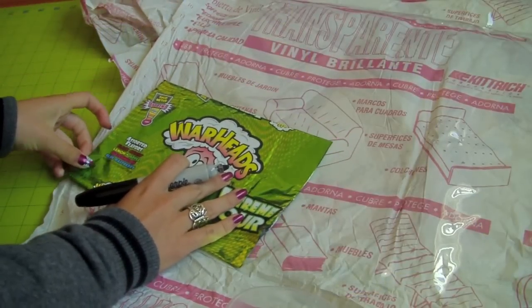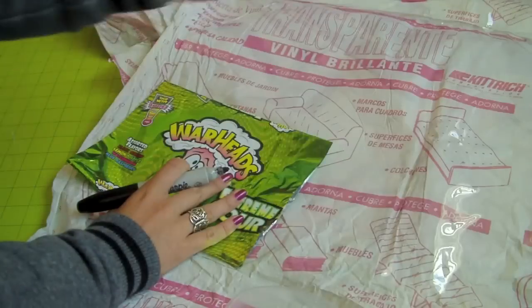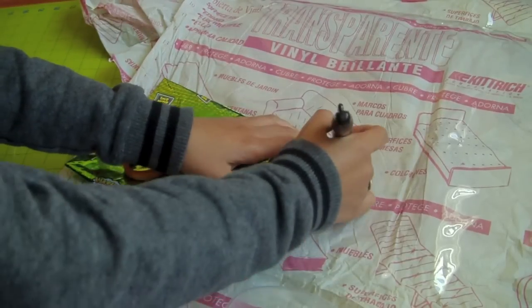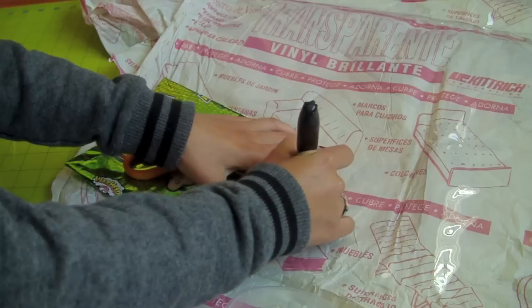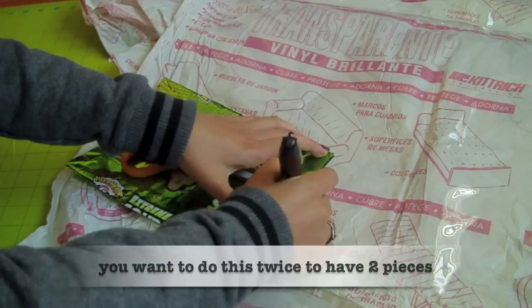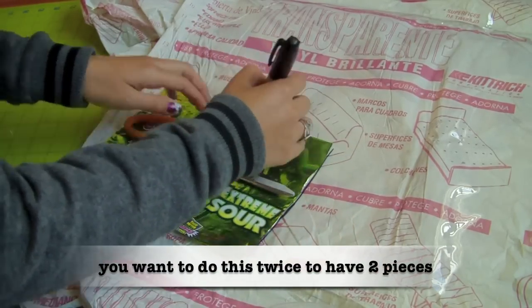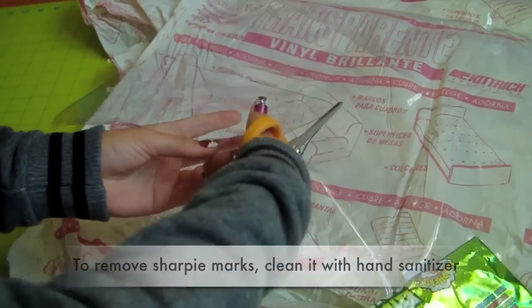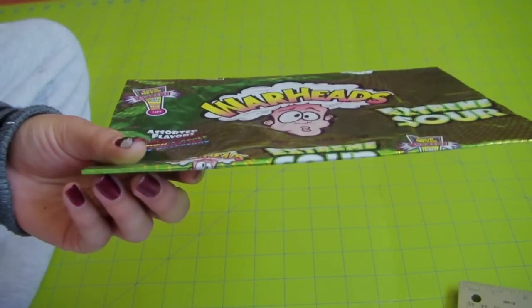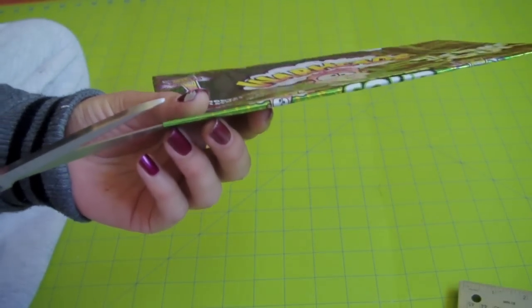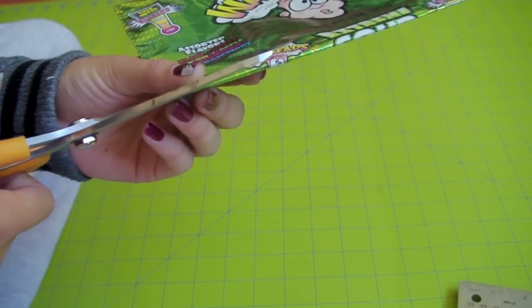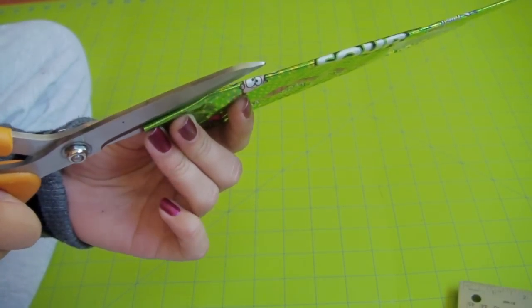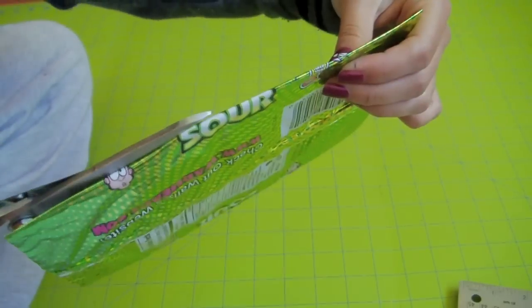Now get your wrapper and place it over your clear vinyl and trace all around. Then cut around the lines and separate the front piece from the back piece. Make sure your pieces stay even all around.